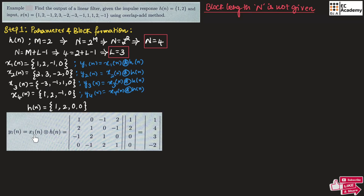To find y1(n), we write x1(n) = {1, 2, −1, 0} in circular shift matrix form. Each successive column is a circular shift of the previous one. This matrix is then multiplied by h(n) = {1, 2, 0, 0}, giving y1(n) = {1, 4, 3, −2}. This procedure is followed to find y2, y3, and y4 as well.